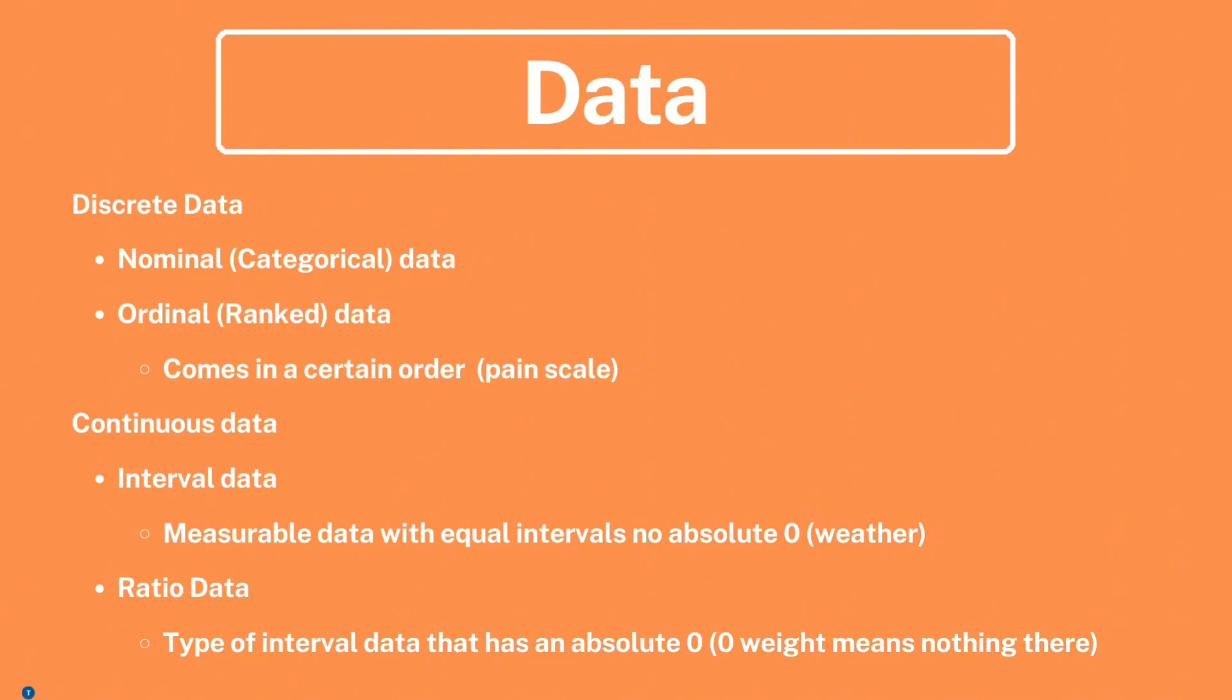Finally, we have ratio data, a subset of interval data that features an absolute zero point, meaning a value of zero indicates the complete absence of the quantity being measured. An illustrative instance is weight: if something has a weight of zero kilograms or pounds, it means there is nothing there. This distinction in data types is crucial in selecting appropriate statistical methods for analysis and gaining meaningful insights for our research.